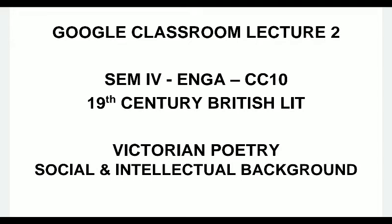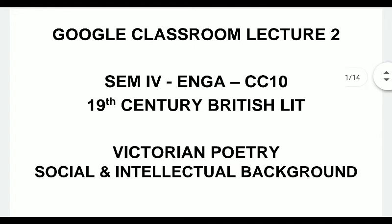Hi everyone. As I told you in my last lecture, we'll have to start with Victorian poetry, which is the 19th century British literature as a part of your CC10 syllabus. We are beginning with the Victorian age today in general, because before we proceed to the two poems in your syllabus, we'll have to cover the social and intellectual background of the Victorian age. This is important because you will find ample reflections of these traits in the two poems in your syllabus.